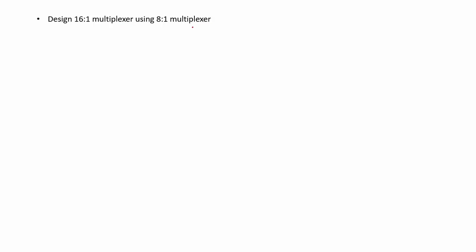A 16-to-1 multiplexer has 4 select lines, 16 input lines and 1 output. An 8-to-1 multiplexer has 3 select lines, 8 input lines and 1 output. So in order to get 16 inputs, I'll need 2 8-to-1 multiplexers.